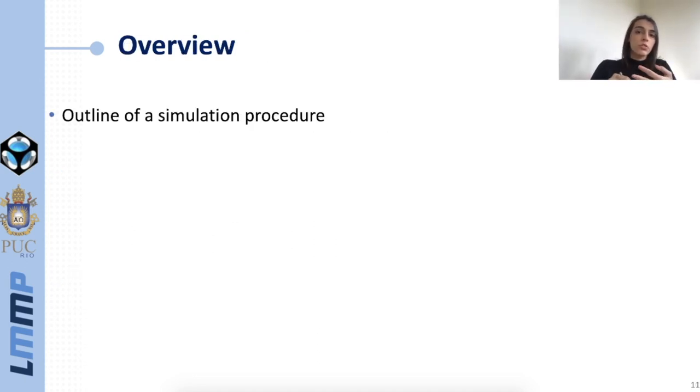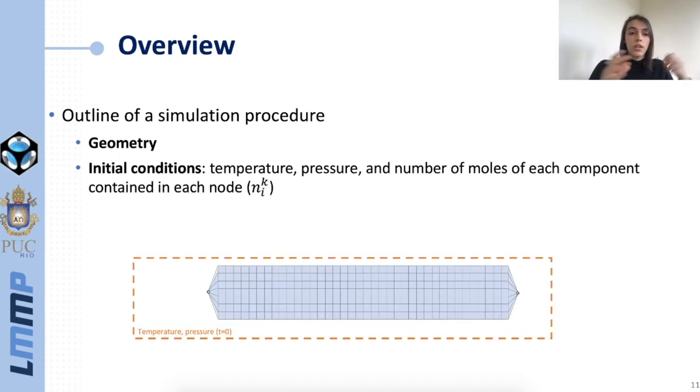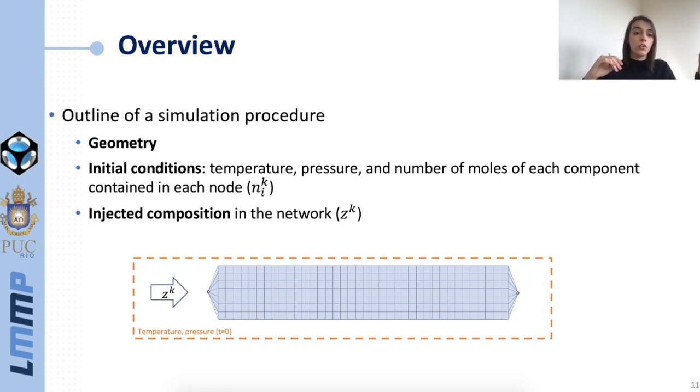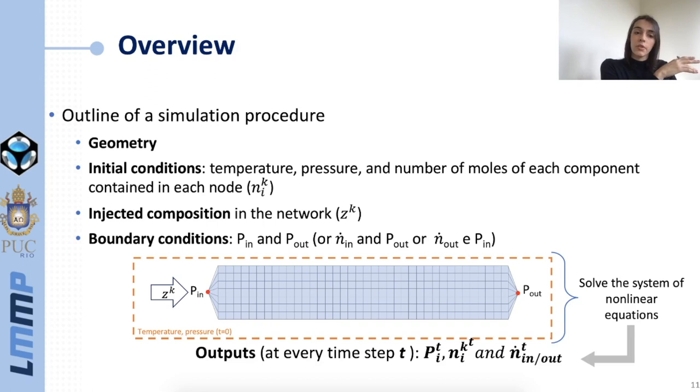Now just before going to the results I would like to give an overview of a simulation procedure. When we want to simulate a case first we define the geometry of the network, then the initial conditions which are the temperature, the pressure and number of moles of each component contained in each node. Then we define the composition that we will inject in the network and the boundary conditions which can be either pressure in both inlet and outlet of the network or pressure in one end and molar flow rate in the other. With this data we can form that system of nonlinear equations and solve it, getting for each simulation time step the outputs that are pressure and number of moles of each component for each node and molar flow rate in and out of the network.